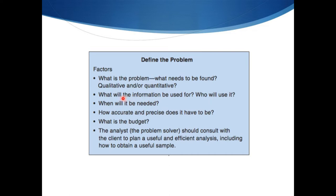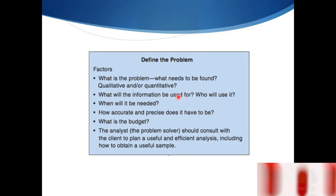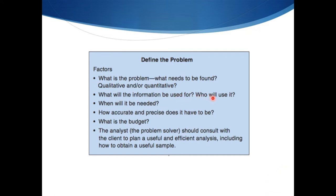Also consider what the information will be used for and who will use it. For example, you may come across a person who wants to reverse engineer a cosmetic product to identify the chemicals present. After doing reverse engineering, they can produce the product locally at low cost. However, you have to tell them that there are a number of processes involved — both qualitative and quantitative — and the cost may be much more.